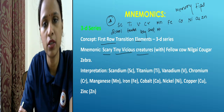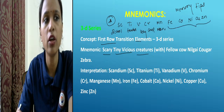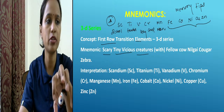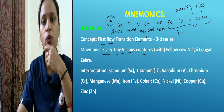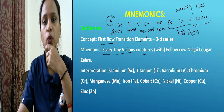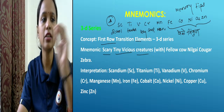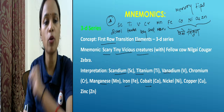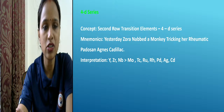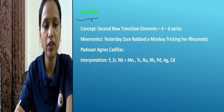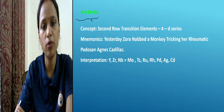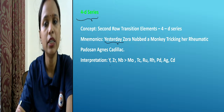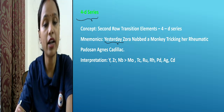This easy mnemonic is on our website: 'School Teacher Very Cruel Man.' If there are more elements in a series or group, try to divide into parts and make separate mnemonics. For the 4d series — Yttrium, Zirconium, Niobium, Molybdenum, Technetium, Rhodium, Palladium, Silver, Cadmium — the mnemonic is: 'Yesterday Zora Knobled A Monkey Checking Her Rheumatic Pedals And Cadillac.'